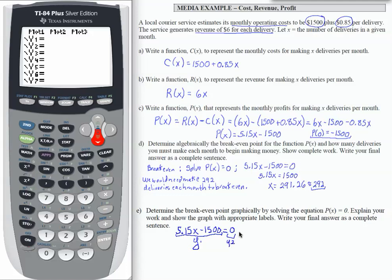So into y1, I'm going to enter 5.15x minus 1500, and then into y2, I'm going to enter 0. So what I want to do is to see where those two graphs intersect, and that should give me the same result that I found in Part D.